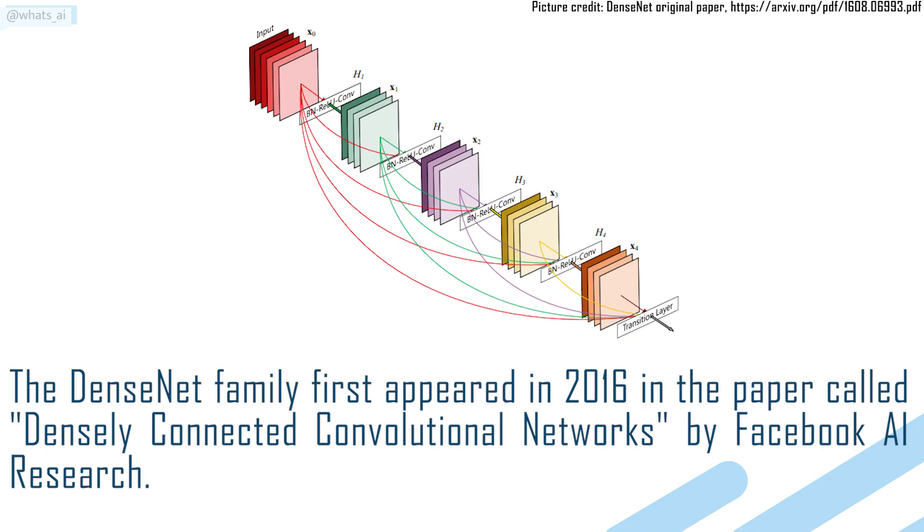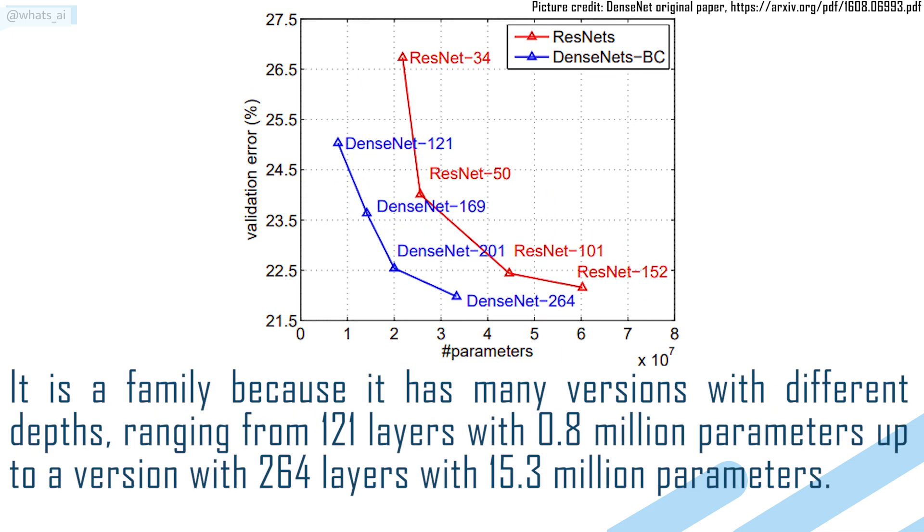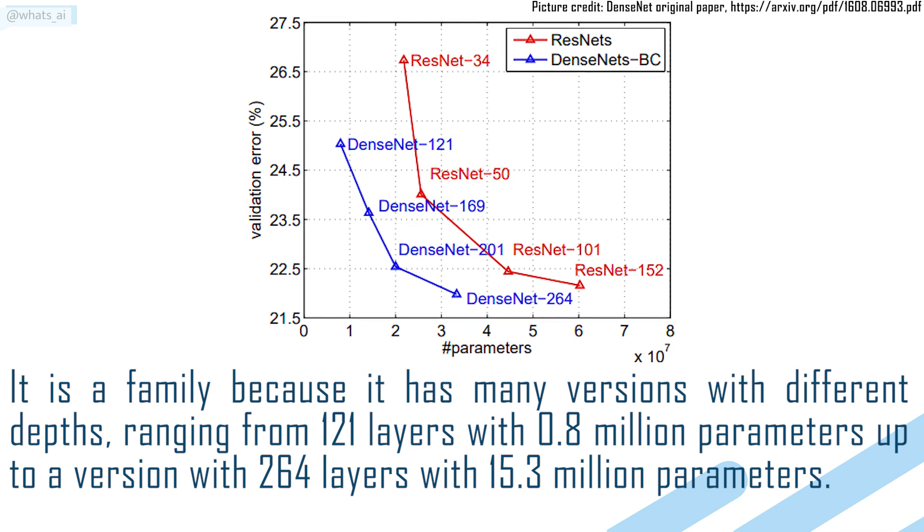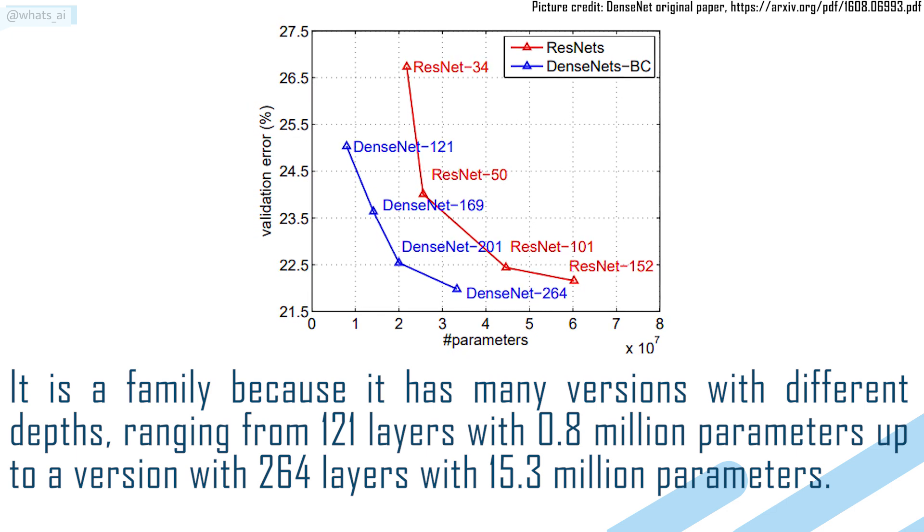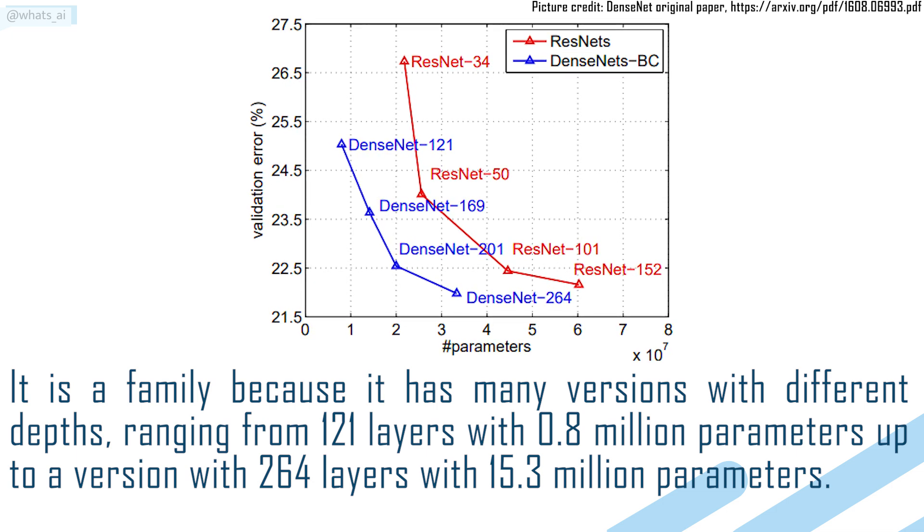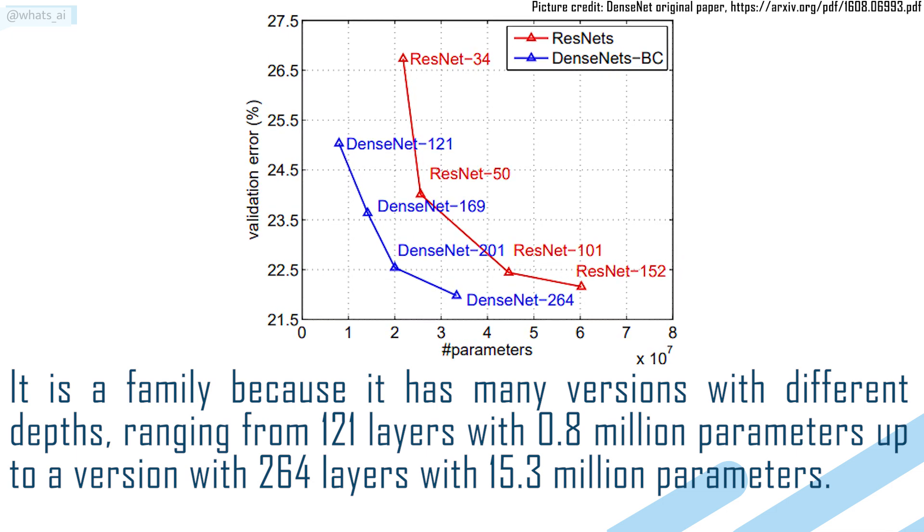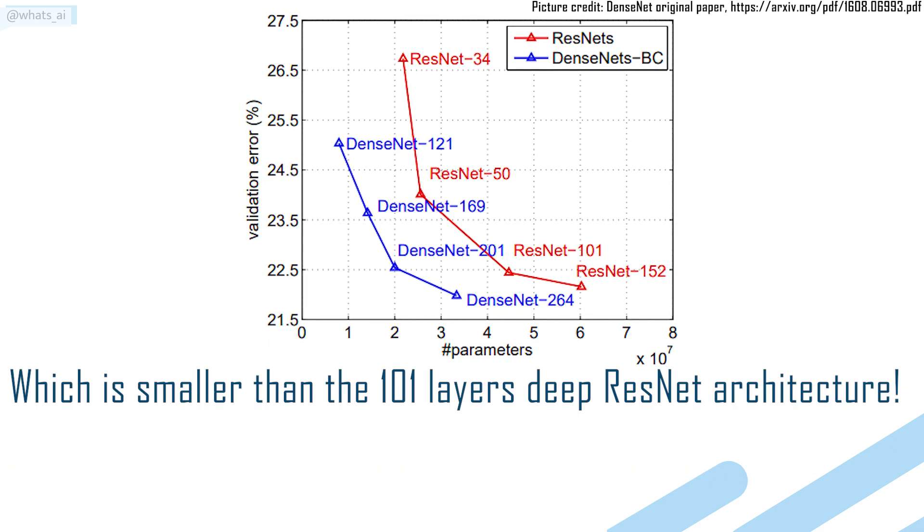The DenseNet family first appeared in 2016 in the paper called Densely Connected Convolutional Networks by Facebook AI Research. It is a family because it has many versions with different depths, ranging from 121 layers with 0.8 million parameters up to a version with 264 layers with 15.3 million parameters, which is smaller than the 101 layers deep ResNet architecture.